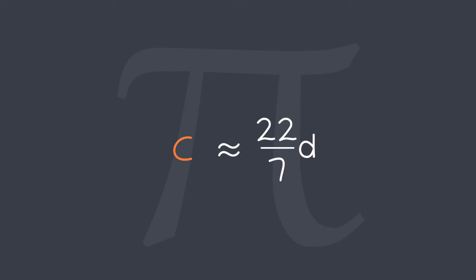This gives us pi which is c by d as approximately 22 by 7. But remember pi cannot be written exactly as a fraction.